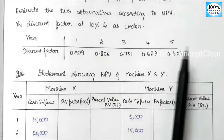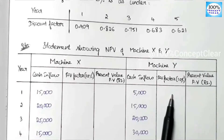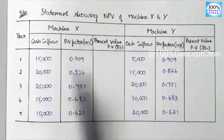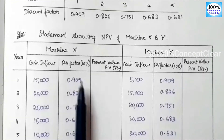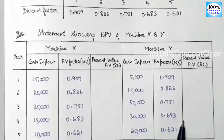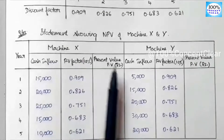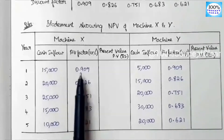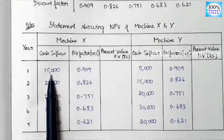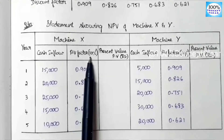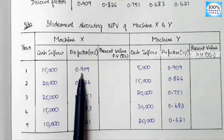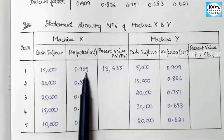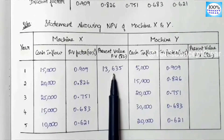We apply the 10% discount factor for each year. For the present value calculation, we multiply cash inflow by the PV factor in each year. In the first year for machine X, cash inflow is 15,000 multiplied by PV factor 0.909.